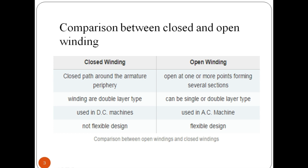The difference between closed and open windings are: open winding are open at one point and form several sections. Open winding can be single or of double type. Their design is flexible.